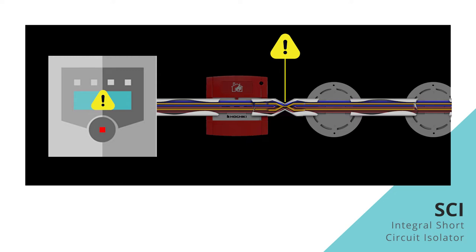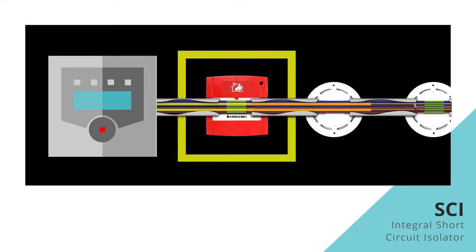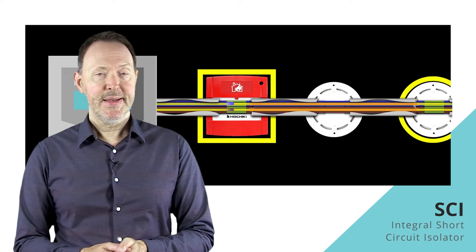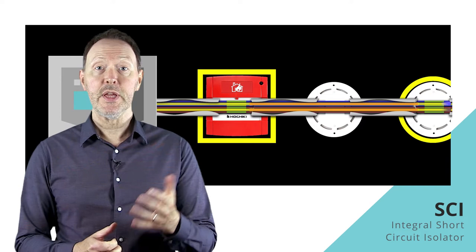Without voltage on the loop, the fire control panel can't receive any data from any device, and so in effect the whole loop of devices is lost. In this second example, this manual call point and this smoke sensor both feature an integral SCI. Short circuit isolators are essentially electronic components within a device that will monitor the incoming and outgoing voltage passing through the device from the loop cables.